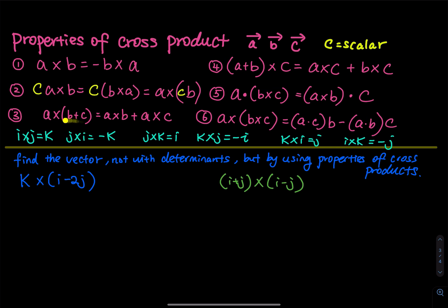We go by pairs. The first pair: i cross j equals k. When you switch to j cross i, the k becomes negative. For j, k, i: j cross k equals i, and k cross j gives a negative. For k, i, j: k cross i equals j, and i cross k gives a negative.